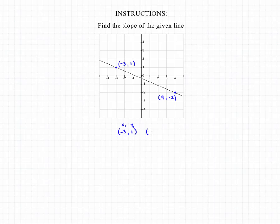Label them as x₁, y₁ and x₂, y₂, and then plug them into our equation for slope, which is the change in y over the change in x, or y₂ minus y₁ over x₂ minus x₁.